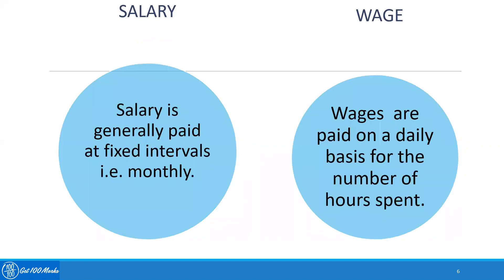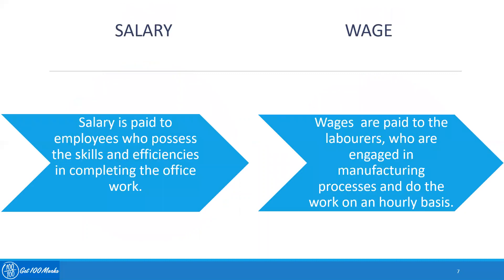Salary is generally paid at fixed intervals, that is, monthly. Wages are paid on a daily basis for the number of hours spent. Salary is paid to employees who possess the skills and efficiencies in completing office work, while wages are paid to laborers engaged in manufacturing processes who do work on an hourly basis.